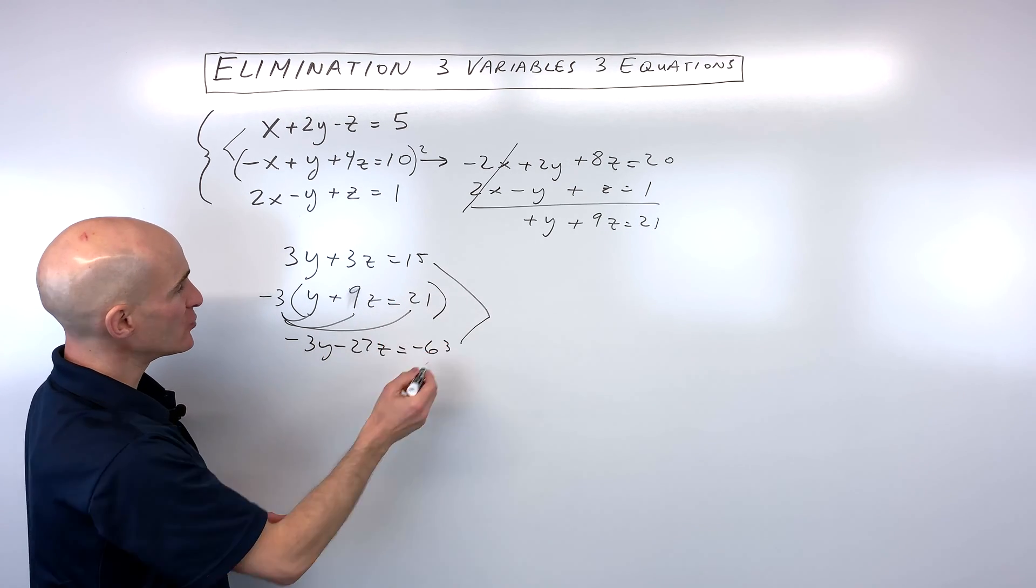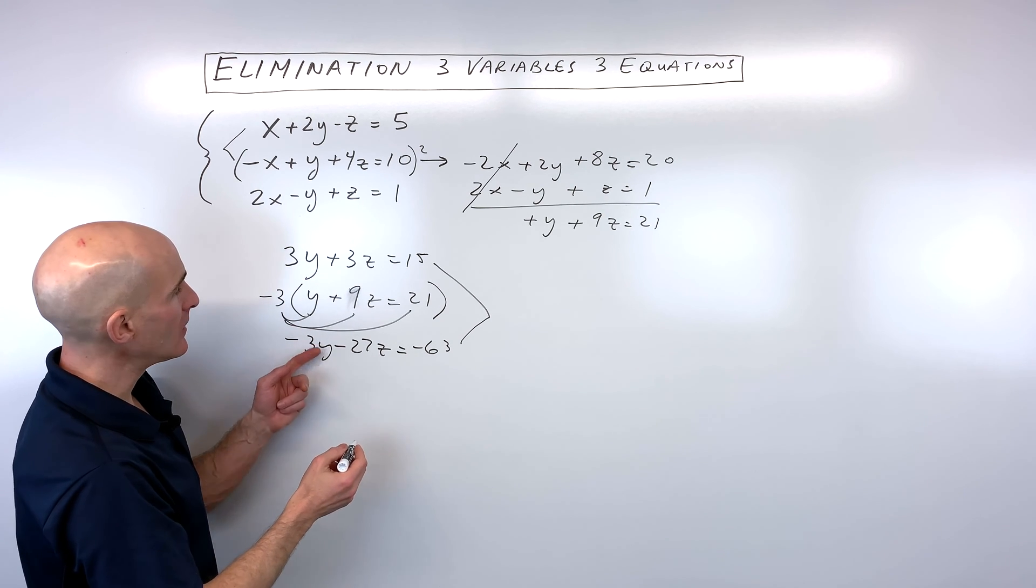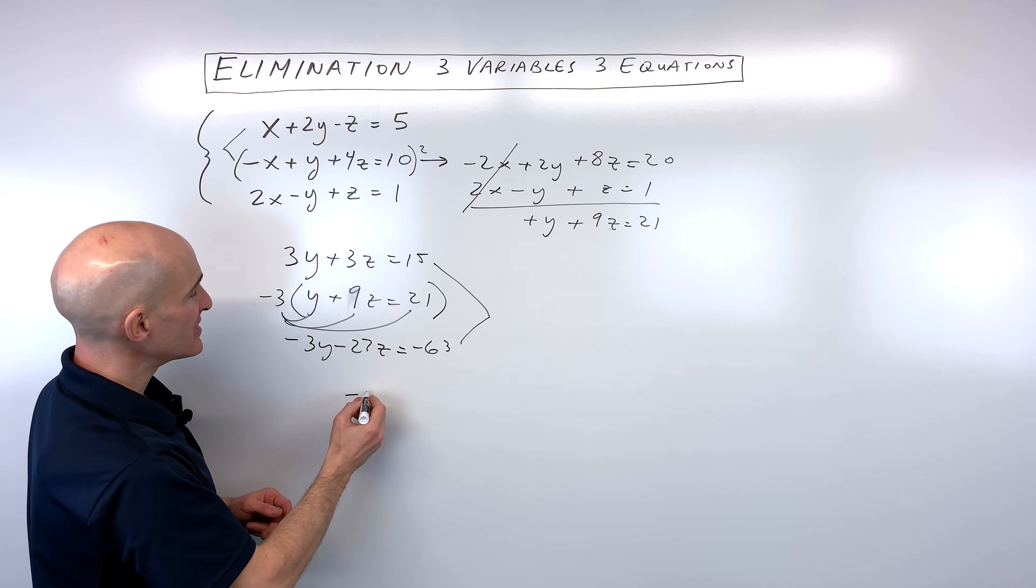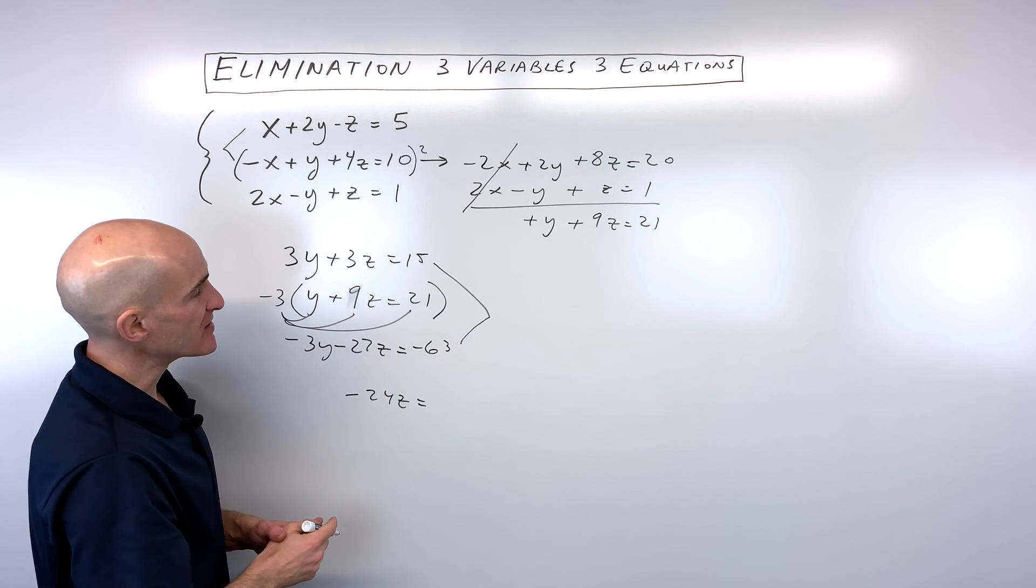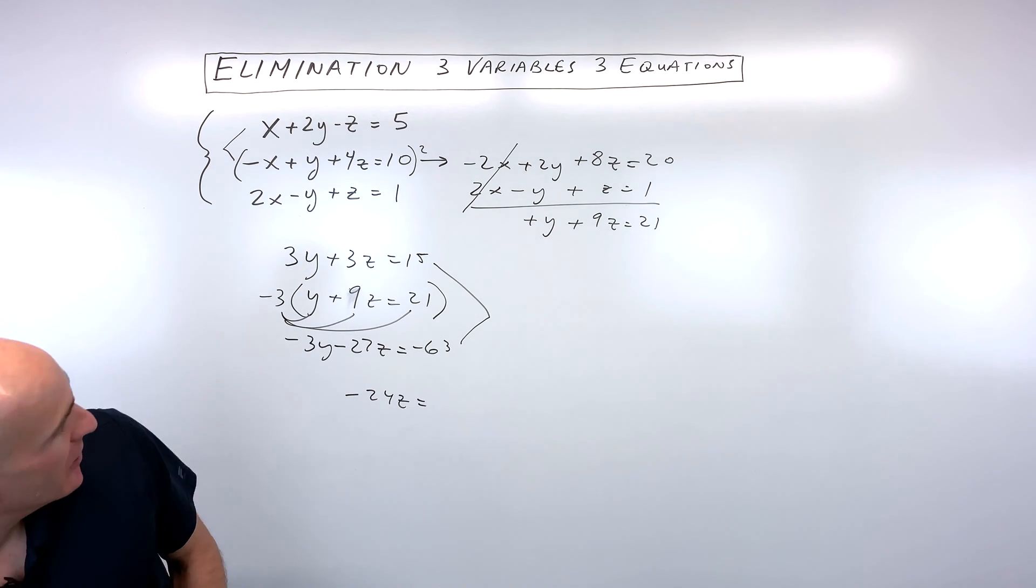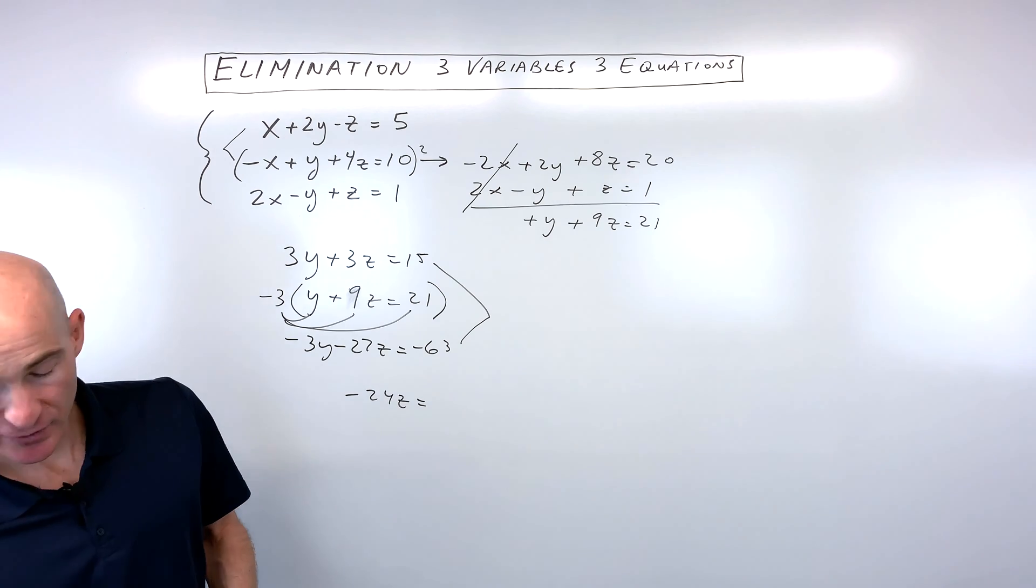Now if we add these two equations together, you can see that the 3y and the negative 3y, those cancel. 3z minus 27z is negative 24z. And 15 minus 63 is how much? Let's do that on the calculator. So we've got negative 63 plus 15, which is negative 48.